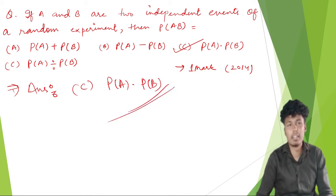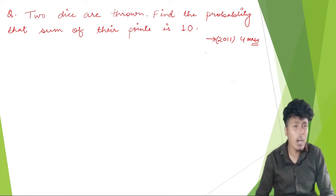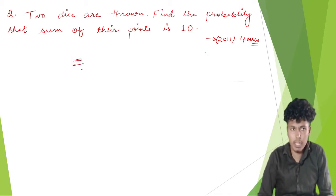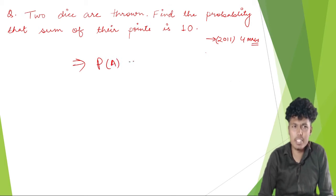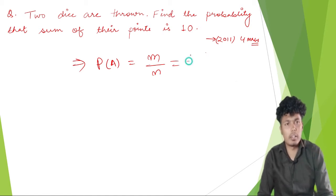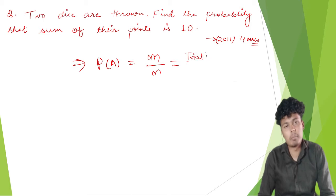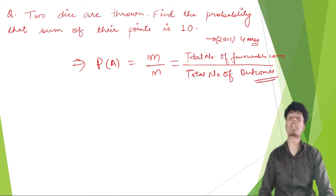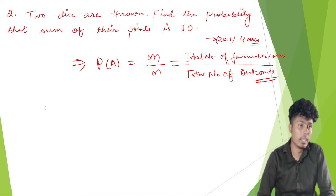Now we are with the main questions. Before doing these, let me remind you the formula: probability of occurrence of any event equals m divided by n, where m is the total number of favorable cases or events, and n is the total number of outcomes. Remember this formula because we are going to use it in all the coming questions.